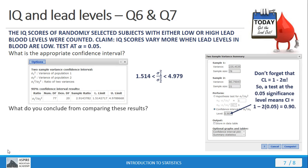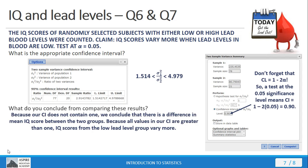Here, 1 is going to be outside the confidence interval. And so, therefore, we conclude that there is a difference in the mean IQ score between the two groups.